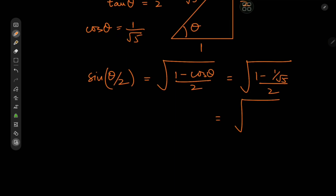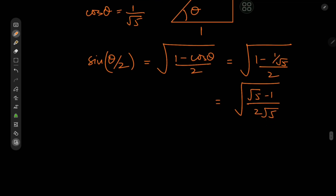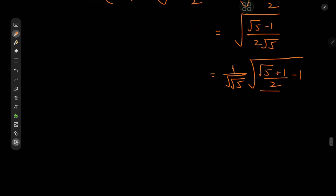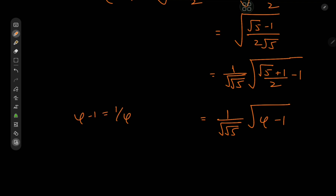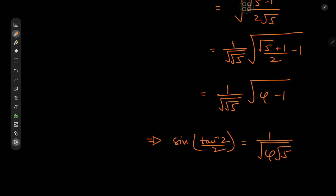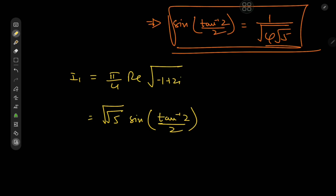Simplifying: sin(arctan(2)/2) = (1/√(√5)) × √((√5 − 1)/2). The expression (√5 + 1)/2 is the golden ratio φ, and (√5 − 1)/2 = φ − 1 = 1/φ. So sin(arctan(2)/2) = 1/5^(1/4) × √(1/φ) = 1/5^(1/4) × φ^(−1/2). That itself is a pretty cool result.